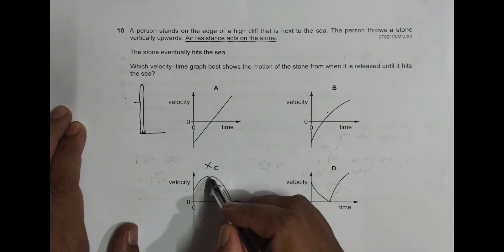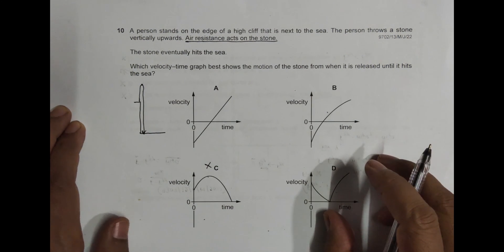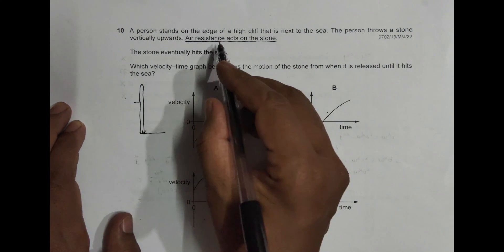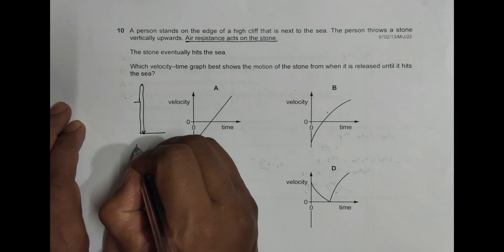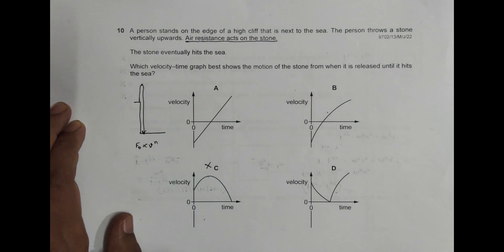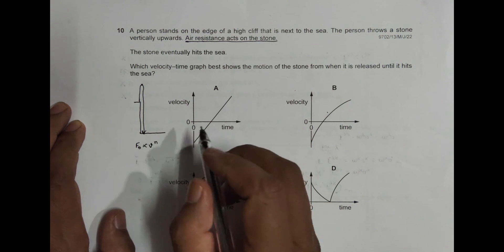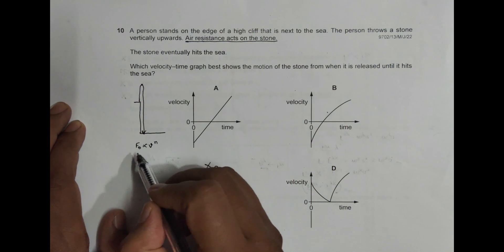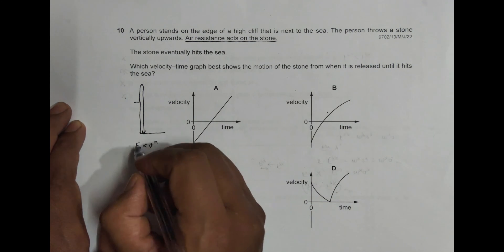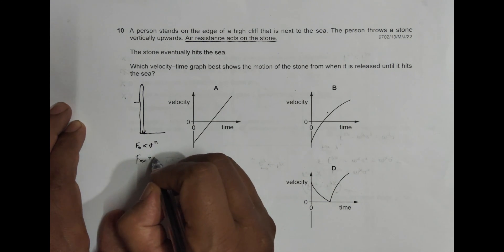Next, since there is air resistance, there will be an opposing force. This opposing force depends on velocity - maybe v to the power n, it could be v, v squared, or something else. Since v changes, the opposing force changes. And if this changes, the resultant force changes.